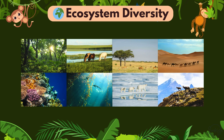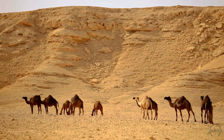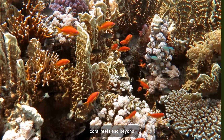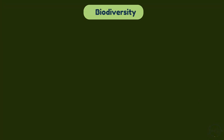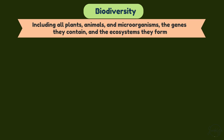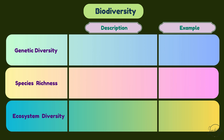If we only had one type of ecosystem on Earth, we'd lose most of the planet's life forms, and most of the services that keep humans alive too. So protecting ecosystem diversity is about keeping Earth's natural systems running — across deserts, rainforests, coral reefs, and beyond. To sum up, biodiversity is the variety of life on Earth, including all plants, animals, and microorganisms, the genes they contain, and the ecosystems they form. The three main components are genetic diversity, species richness, and ecosystem diversity.